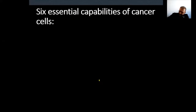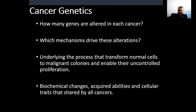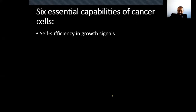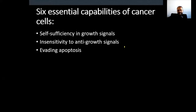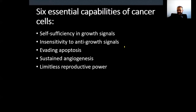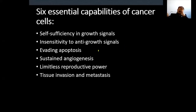There are six essential capabilities of cancer cells — shared characteristics of all cancer cells: self-sufficiency in growth signals, insensitivity to anti-growth signals, evading apoptosis, sustained angiogenesis, limitless reproductive power, and tissue invasion and metastasis. Actually there are more — Weinberg's paper 'Hallmarks of Cancer' lists 11 differences of cancer cells.